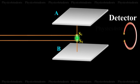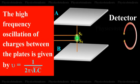Here the plates A and B act as a capacitor having small capacitance value C and the connecting wires provide low inductance L. The high frequency oscillation of charges between the plates is given by ν = 1/(2π√LC).